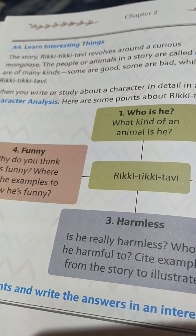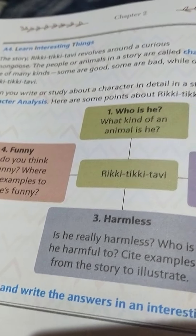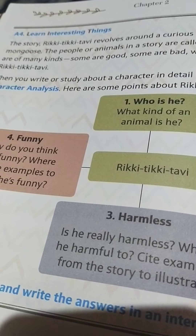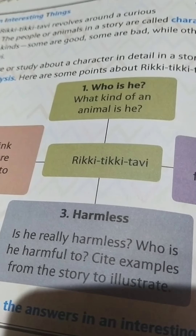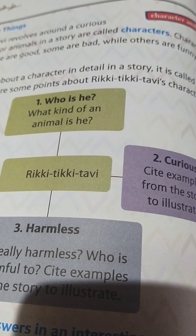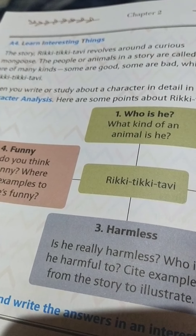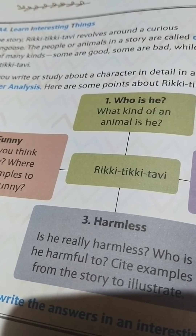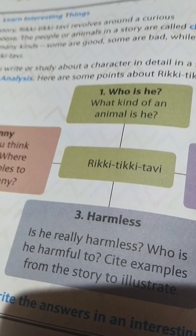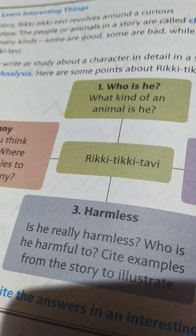Rikki Tiki Tavi is a story whose central character is a curious mongoose — he is very curious to know about things. The people or animals used in a story are called characters. Characters can be good, bad, funny, emotional, or stone-hearted — meaning someone who has no feelings for anyone. We have characters of many types.